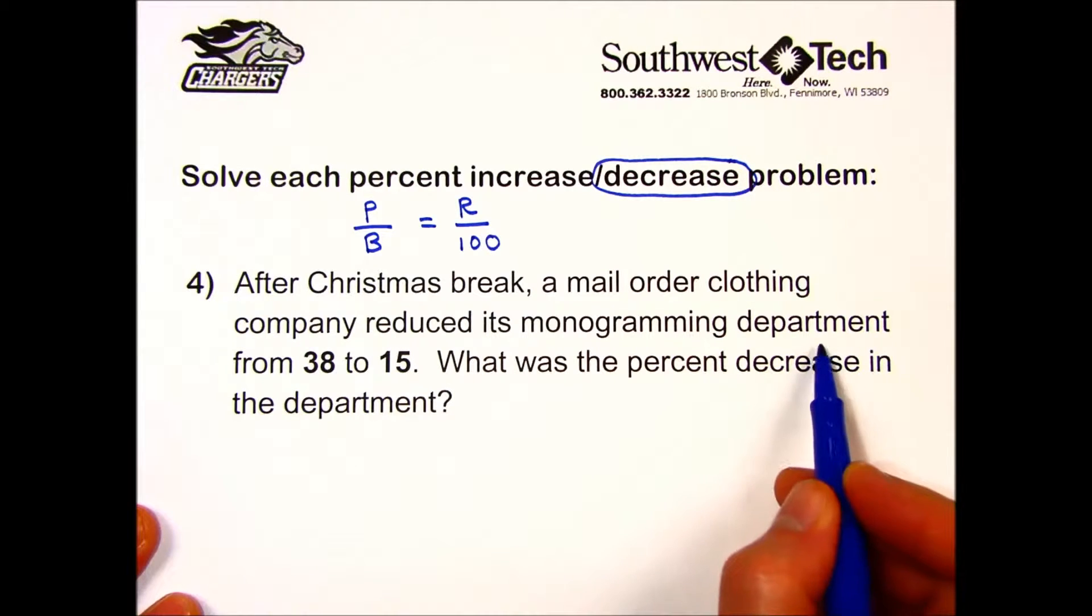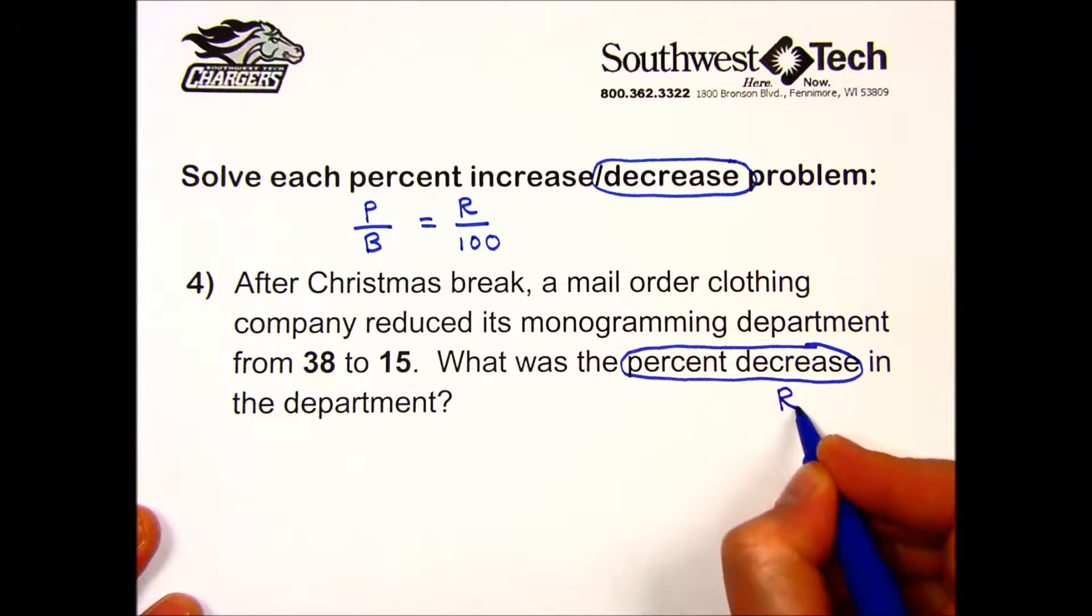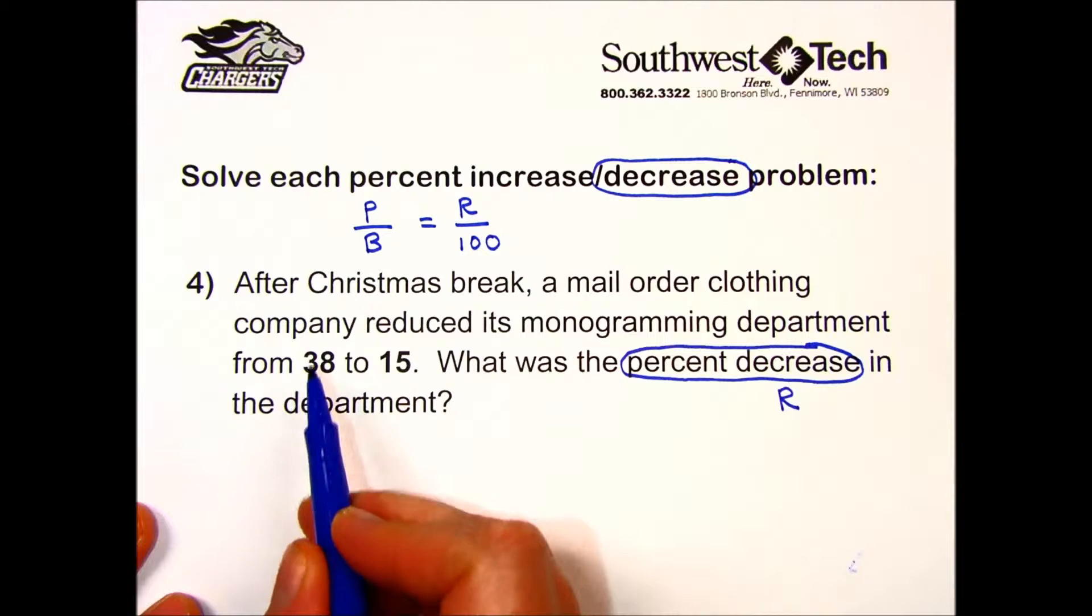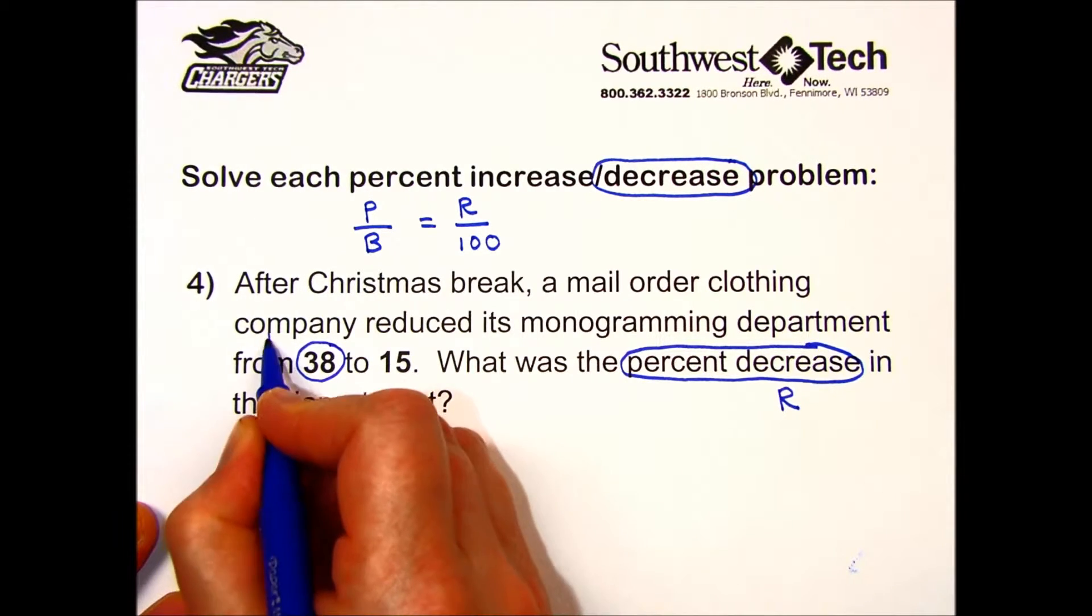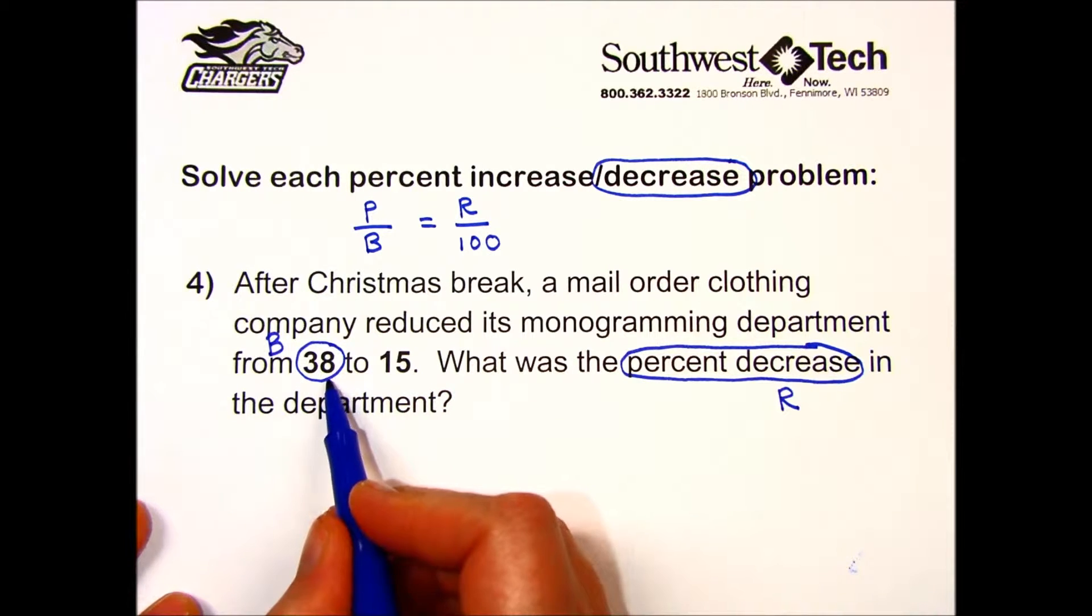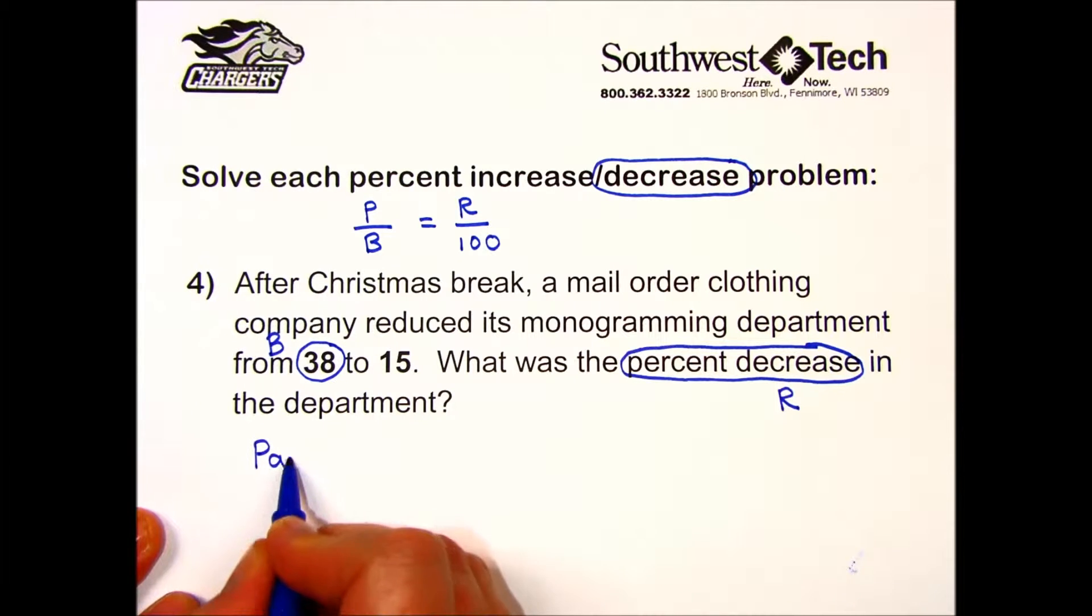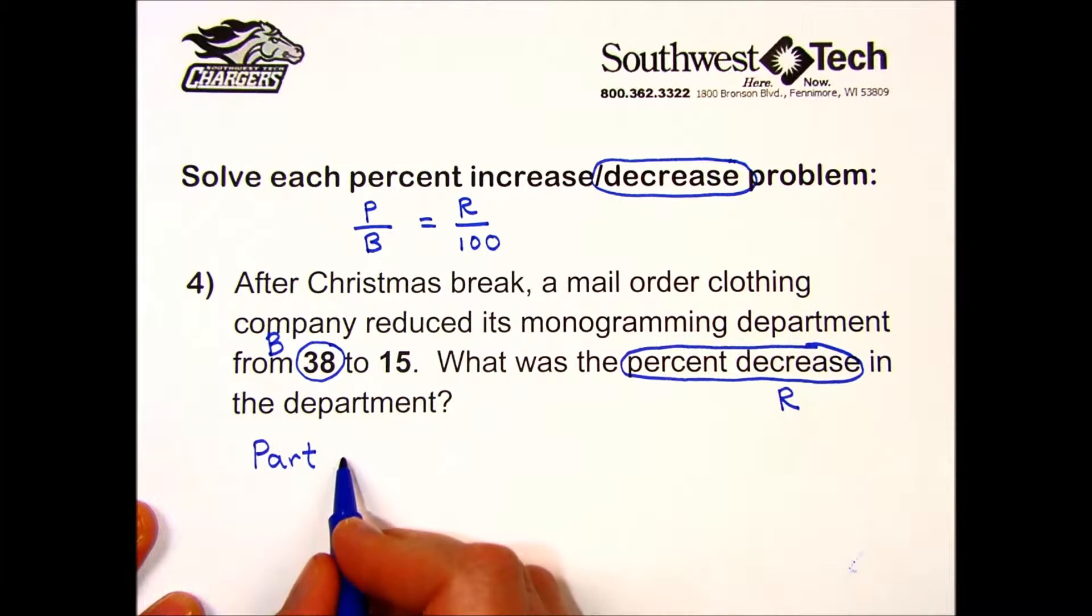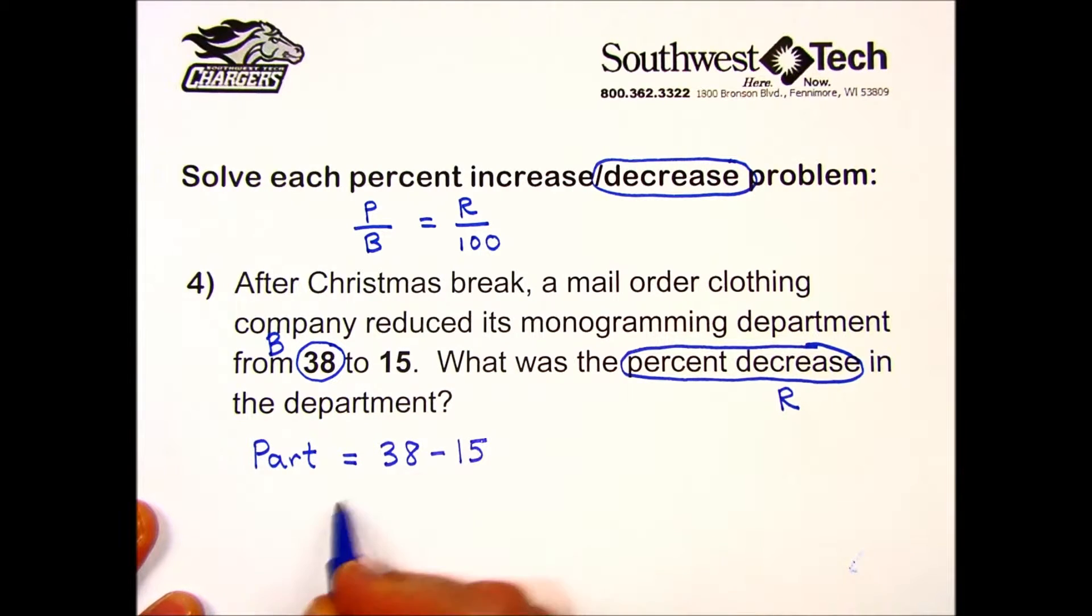We're looking for the rate, percent decrease. The department used to have 38 people before the change, so that's our base. 15 is our current value, and we need to find the part, which is the actual change. We do that by subtracting the two numbers: 38 minus 15 is 23. So their change was a decrease of 23 people.